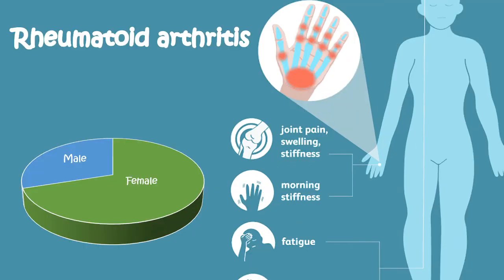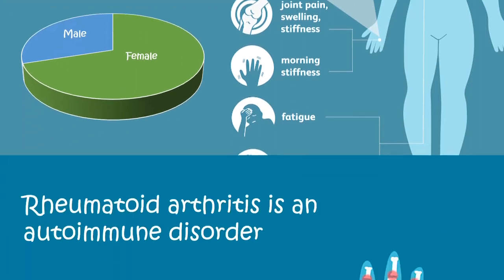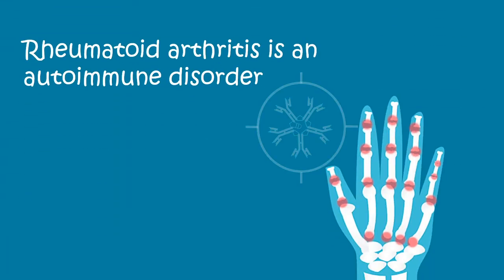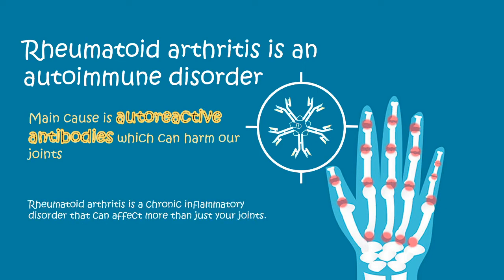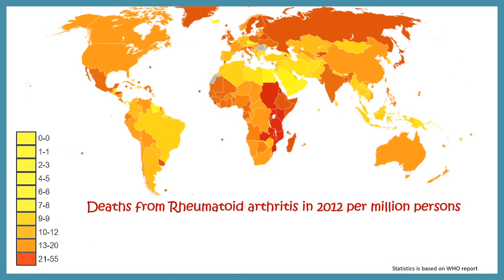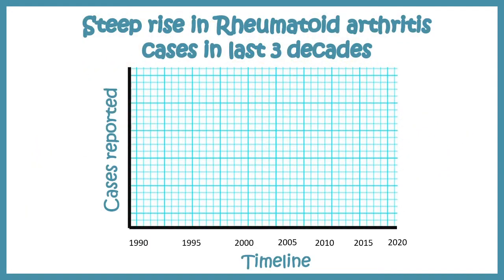Rheumatoid arthritis is an autoimmune disorder. The key cause is an auto-antibody, and these auto-antibodies can harm our joints and get deposited into the joints of our limbs, especially our hands. However, rheumatoid arthritis is not limited to joints — it can also affect other organs such as the lungs and the heart. According to a WHO report, this is the statistics of deaths occurring from rheumatoid arthritis in 2012.